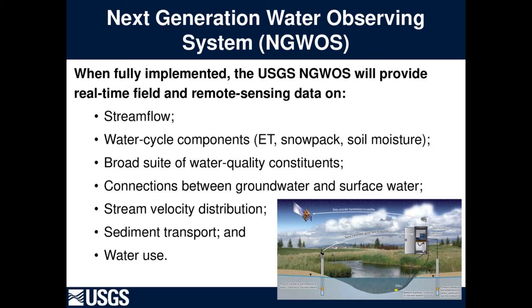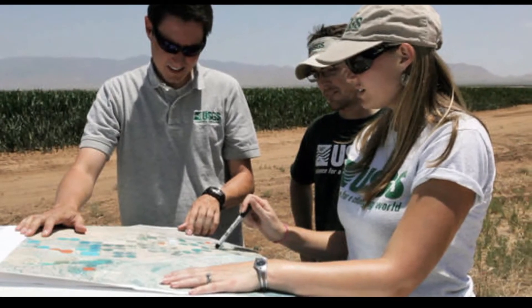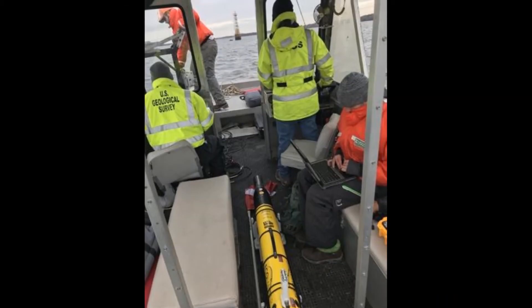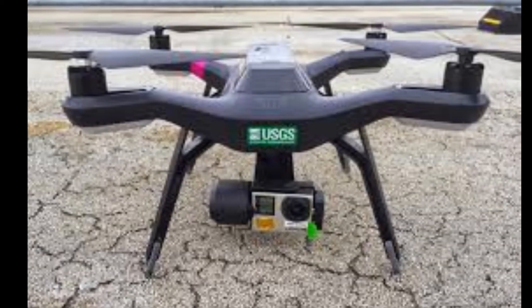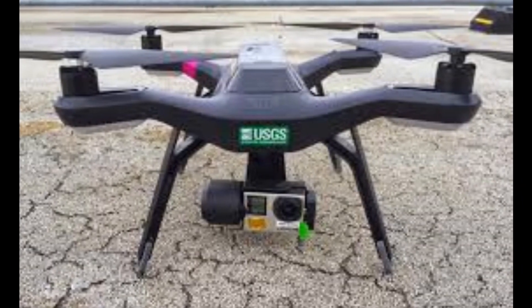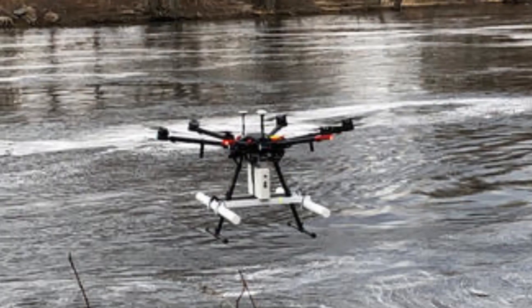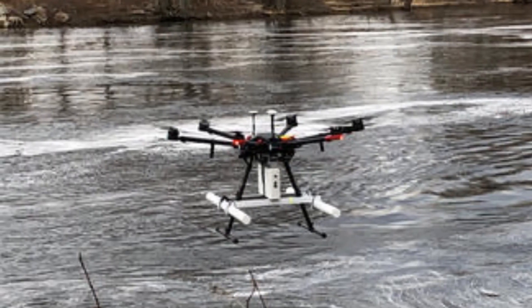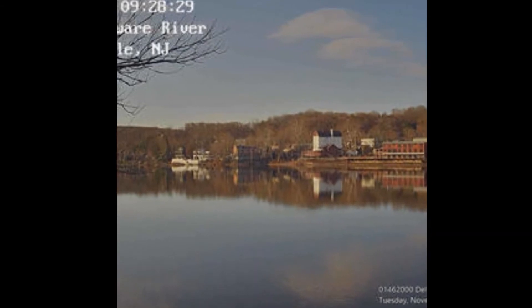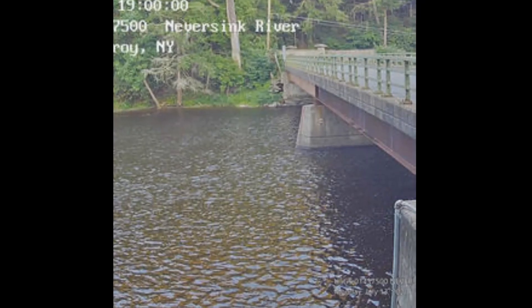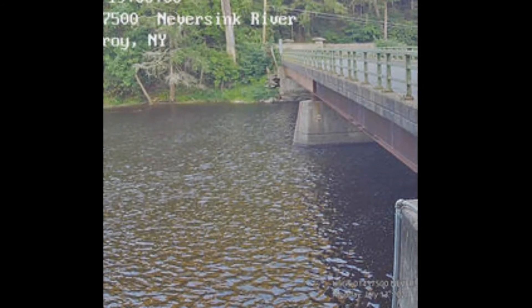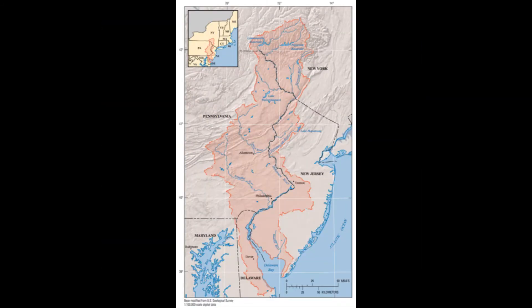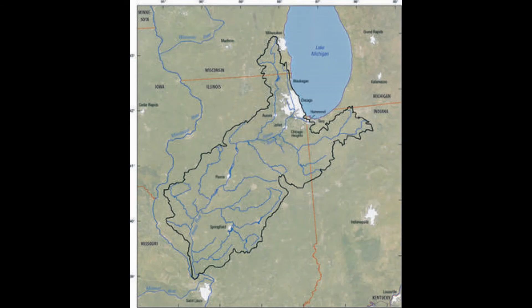This new system is generating integrated data on streamflow, groundwater, evapotranspiration, snowpack, soil moisture, water quality, and water use. The NGWOS utilizes fixed and mobile monitoring assets in the water, ground, and air, including innovative webcams and new ground and space-based sensors. When fully implemented, the NGWOS will intensively monitor at least 10 medium-sized watersheds, making up 10,000 to 20,000 square miles, and underlying aquifers that represent larger regions across the nation. The pilot site is in the Delaware River Basin and began in 2018. The Upper Colorado River Basin and Illinois River Basin have been added in the past two years.